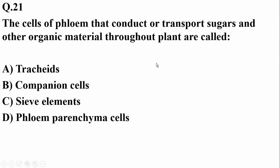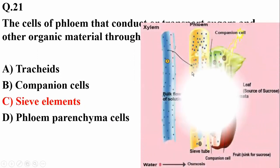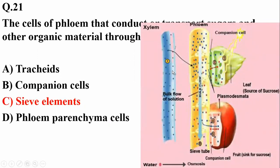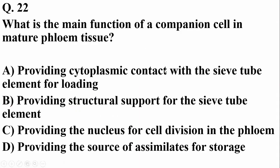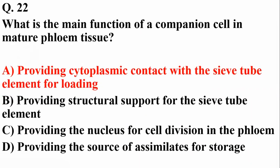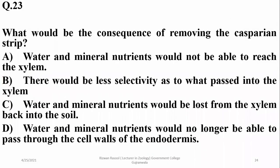Question twenty-one: the cells of phloem that conduct or transport sugars and other organic material throughout the plant are known as sieve elements or sieve tube cells — the major cells of the phloem. Question twenty-two: the main function of companion cells in mature plant tissue is to provide cytoplasmic contact with sieve tube elements for loading of sugars, so Alpha is correct.